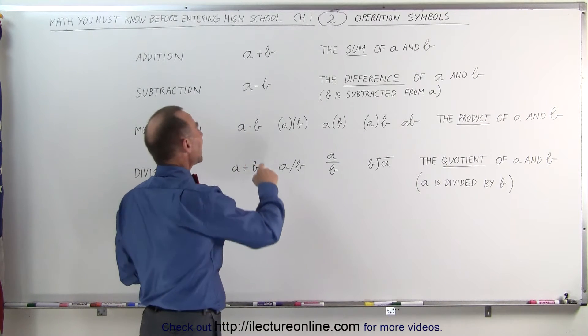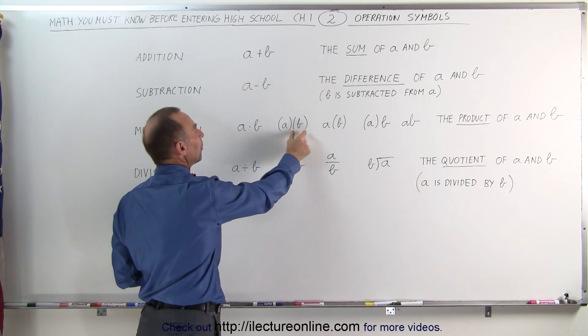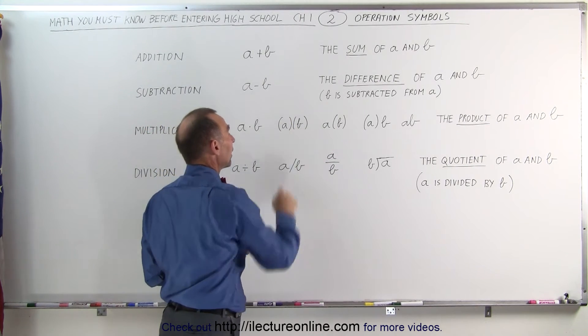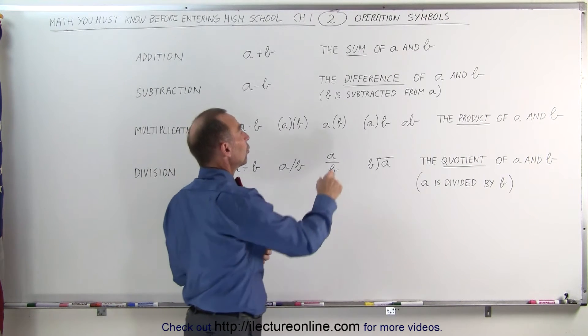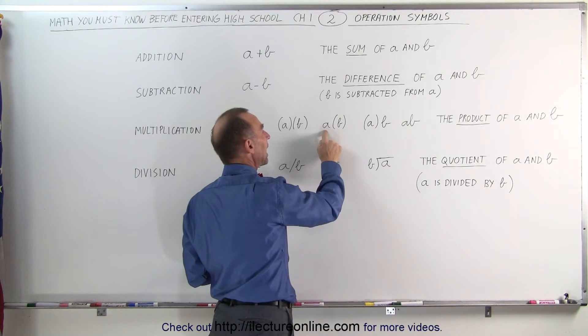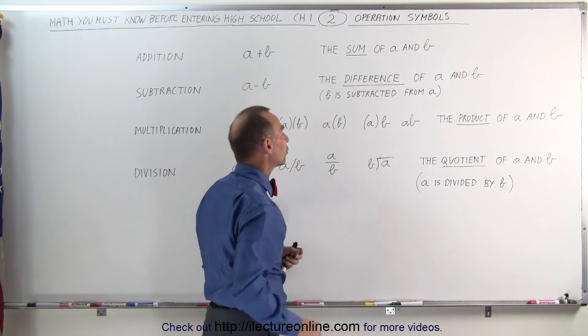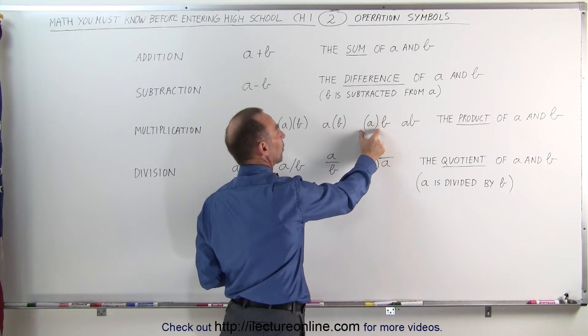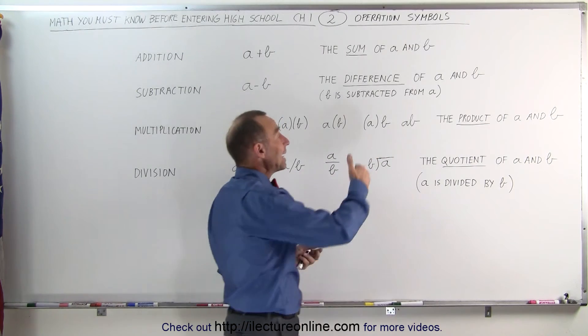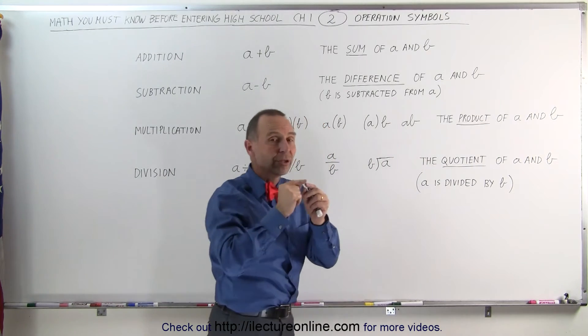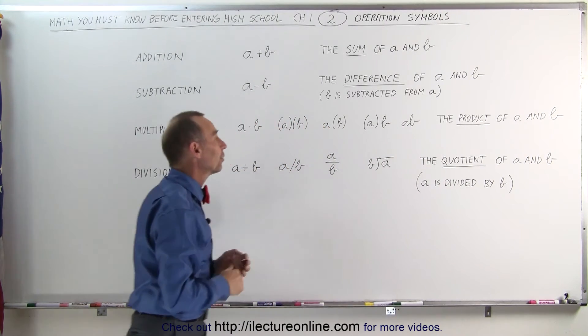Other ways of writing a times b is putting parentheses around the a and parentheses around the b with nothing in between. That also means that a is multiplied with b. Here you can only have one of the two with parentheses, the other one without, and so this is also a multiplied with b or the product of a and b. You can reverse parentheses, you can put parentheses on the first one and not on the second one. This also means the product of a and b. Or you can simply write a and b together. This also means a multiplied times b. Even though they're written together like that it still means the product of the two.